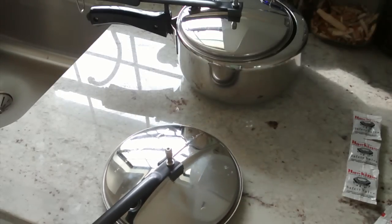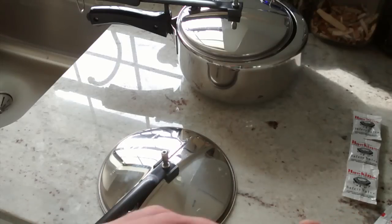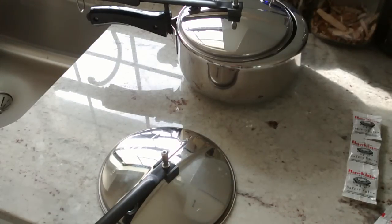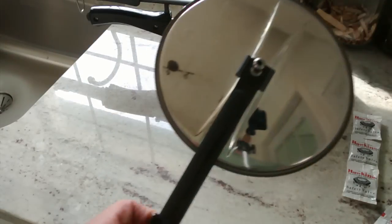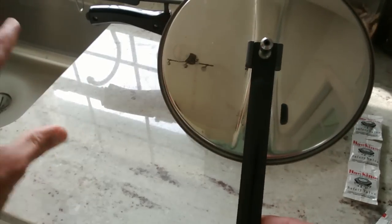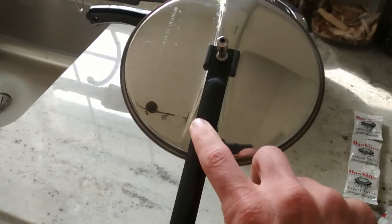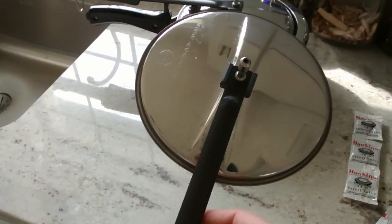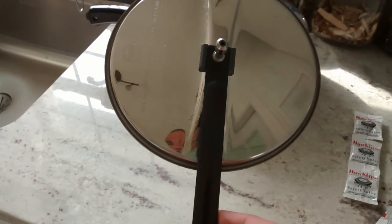They describe this as a fusible alloy, and it just has a much lower melting point than the other material, the stainless. So when it goes, it will release the steam out the sides. It won't come at you if you're nearby it, because the handle will block it.